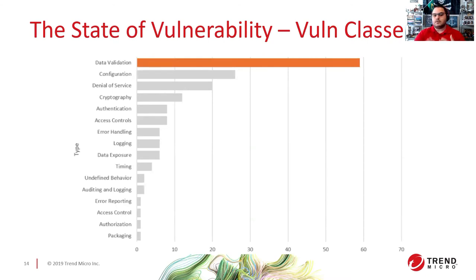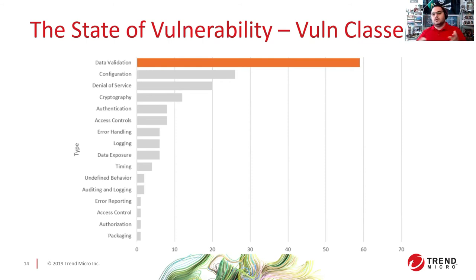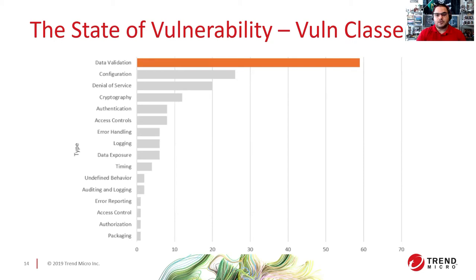The vulnerability class or category with the most vulnerabilities is data validation — it's way over the second place, which is configuration. Data validation relates to either input validation or lack of verification of data, and can also cause things like buffer overflows and heap overflows. It's really interesting to find that a lot of these projects have data validation issues, which is something that can be easily solved by adding proper validation in your code, doing proper exceptions, try-catches, and so on.